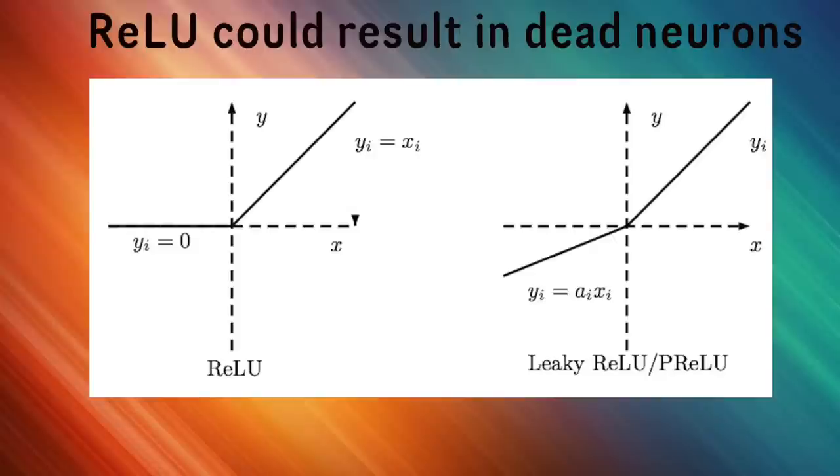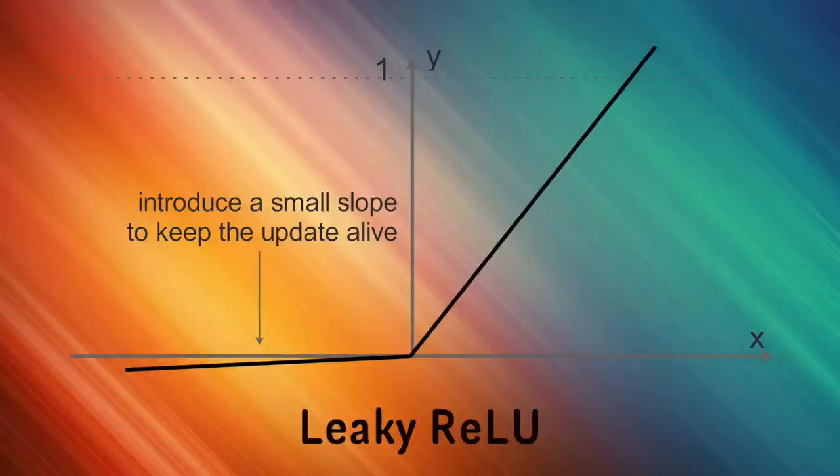Meaning a big gradient flowing through a ReLU neuron could cause a weight update that makes it never activate on any data point again. So then gradients flowing through it will always be 0 from that point on. So a variant was introduced called the leaky ReLU to fix this problem. Instead of the function being 0 when x is less than 0, it instead has a small negative slope.